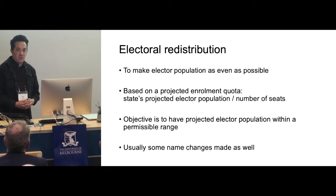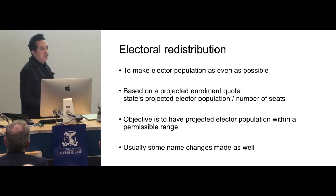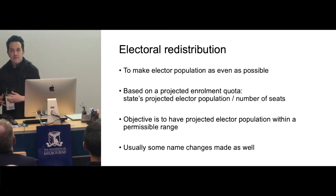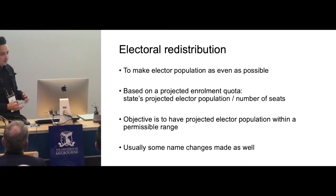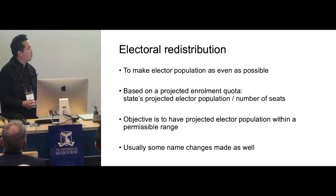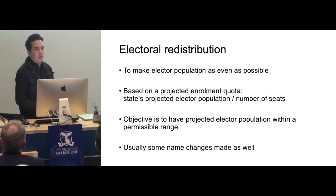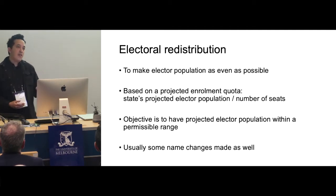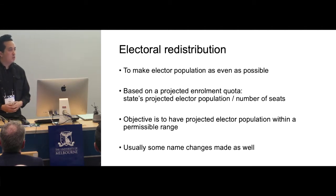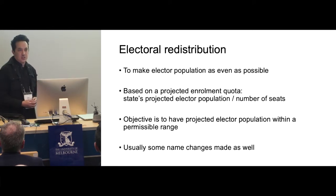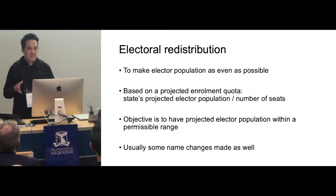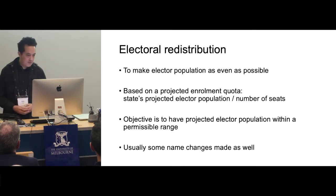How they work it out is they take the projected enrolment quota — so they use the ABS's projections based on the census divided by the number of seats in the parliament for which the election is being held. The objective is to have the projected elector population, usually before the next election, within a permissible range of that quota. There will be some higher, some lower, and they usually use the opportunity to make a few name changes as well. We've just had quite a few federal redistributions and they've changed the division of Batman to Cooper and Melbourne Ports to McNamara, for example — same boundaries but changed names.